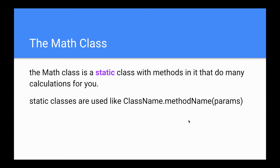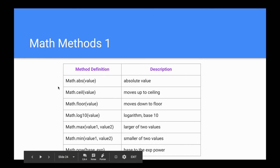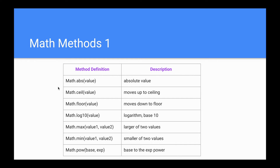Math methods. The Math class is a static class with methods that can do a lot of calculations for you. Static classes are used like ClassName.methodName and then the parameters — in this case, our class name is Math. The first set of math methods: Math.abs gives you the absolute value; Math.ceil takes a decimal and rounds it up always; Math.floor takes a decimal and rounds it down always; Math.log10 gives you the logarithm base 10; Math.max gives you the larger of two values; Math.min gives you the smaller of two values; Math.pow raises a base to an exponent. Most math methods return doubles.